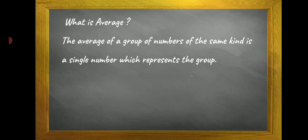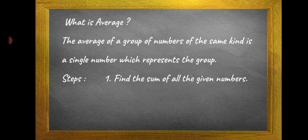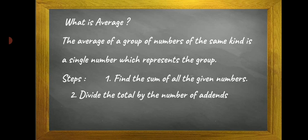We find out the average of a group of numbers by adding all the numbers, then dividing the total by how many numbers there were.